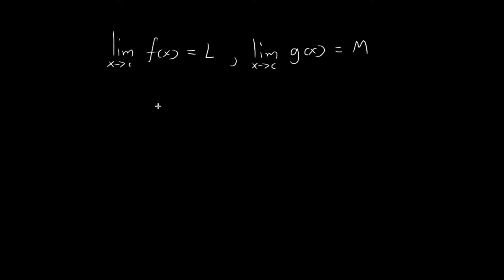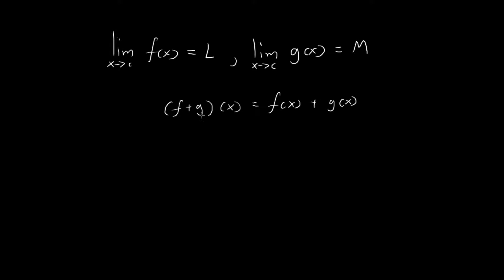First of all, I defined a function called f plus g. I'm going to use the notation f plus g to represent a function whose outputs are defined to be equal to f of x plus g of x. So f plus g is the name of this function whose outputs are defined as the sum of the outputs of the two functions f and g.